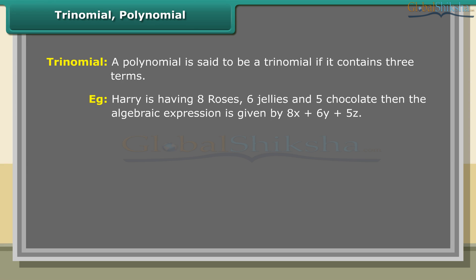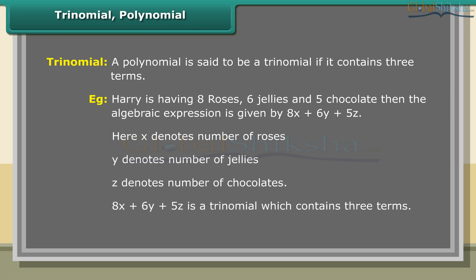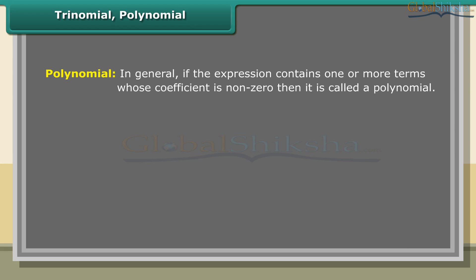A polynomial is said to be a trinomial if it contains three terms. For example, if Harry has eight roses, six jellies, and five chocolates, the algebraic expression is 8x + 6y + 5z, where x denotes roses, y denotes jellies, and z denotes chocolates. 8x + 6y + 5z is a trinomial containing three terms.